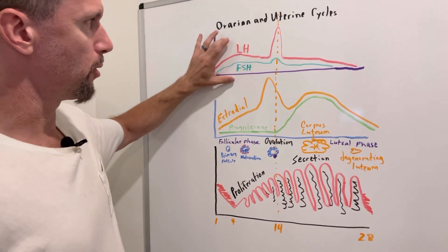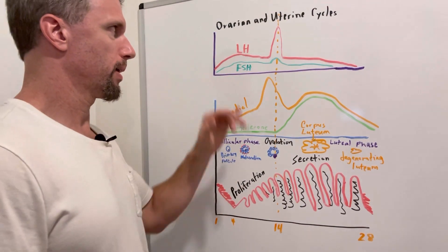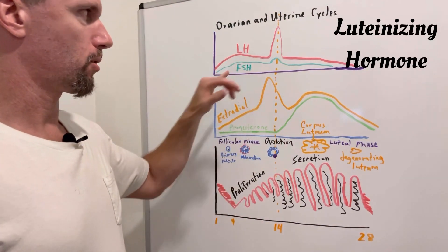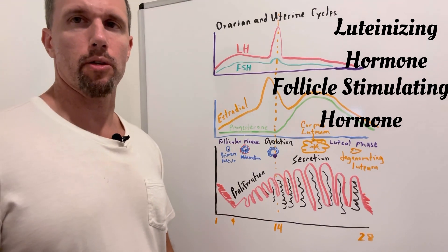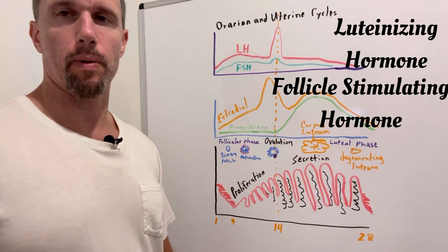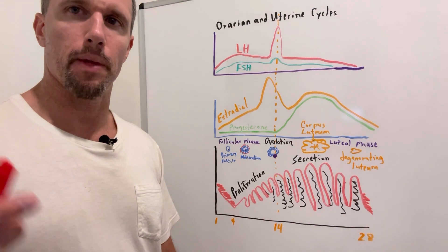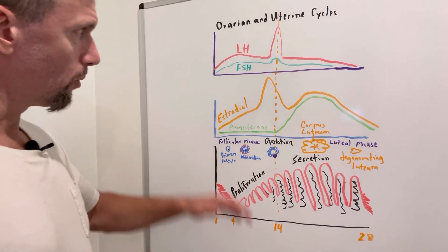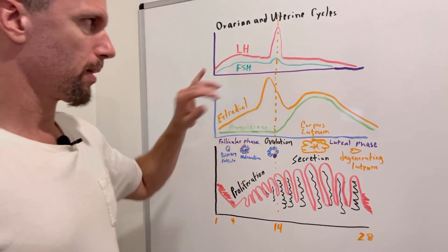So let's go up to this top graph. We have two hormones here. We have luteinizing hormone and follicle-stimulating hormone, two hormones that are secreted by the anterior pituitary in response to gonadotropin-releasing hormone from the hypothalamus. So when these get stimulated, think about this word, follicle-stimulating hormone.